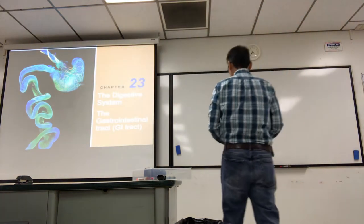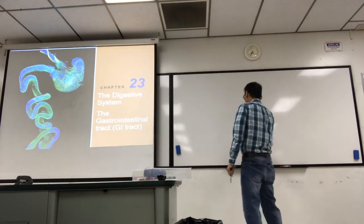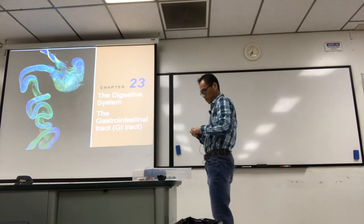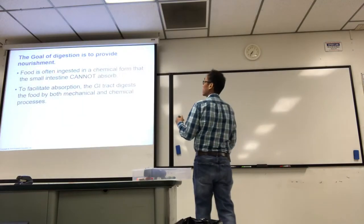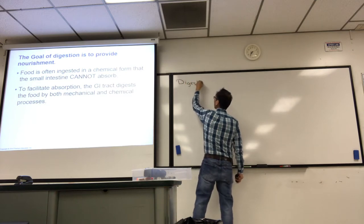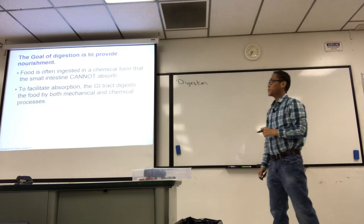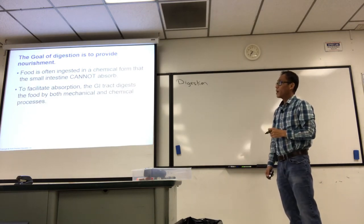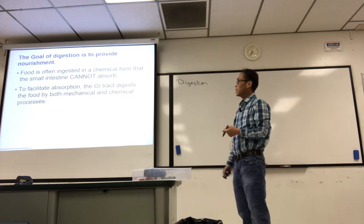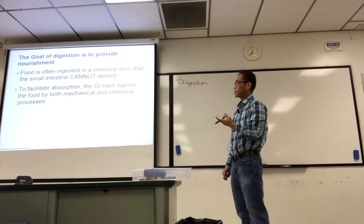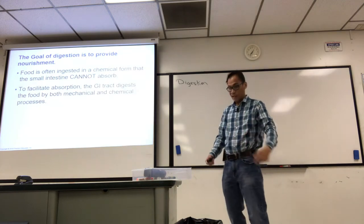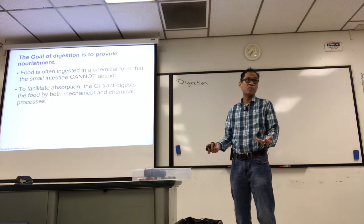We're going to get started on the digestive system. Food is often ingested in chemical form that the small intestine cannot absorb. To facilitate absorption, the GI tract digests food by both mechanical and chemical processes. Just think about food, what it looks like on the plate, and what it looks like after you vomit or coming out the other end — it looks very different. There's a lot of things that happen to food as we digest it.